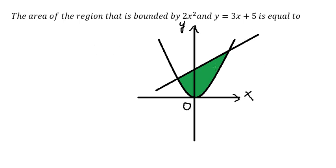So we need to find the intersection between the curve and the line in here. So we have 2x square equal to 3x plus 5.